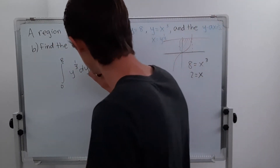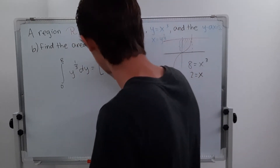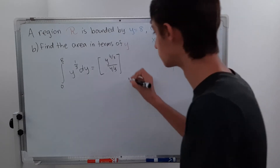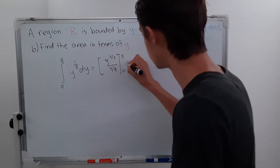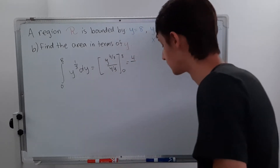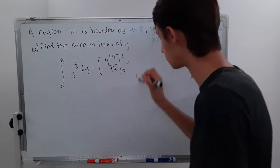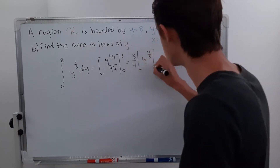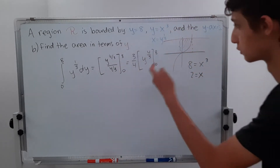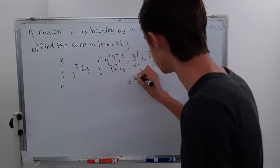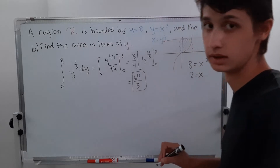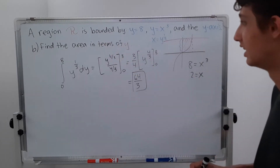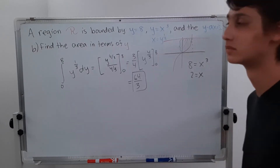We do our basic integration: this is y to the 4/3 divided by 4/3, evaluated from 0 to 8. We can rewrite dividing by 4/3 as multiplying by 3/4. Applying y to the 4/3 from 0 to 8 is pretty easy — just plug in 8 — and this comes out to be 64 over 3 as well. It makes sense that it's the same number because it's the same exact area — it's the same region.